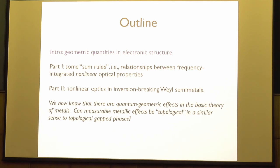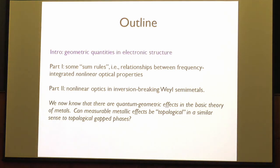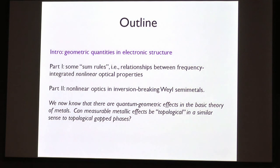We now understand that many of the things we can measure about a solid, especially at low frequency or in the ground state, have something to do with the geometric properties of the Bloch wave functions. The modern theory of polarization is a classic example. These are basically relationships between something about the ground state and something about optical properties integrated over frequency, and it turns out this works for nonlinear optical properties as well.